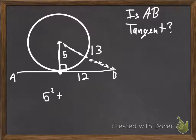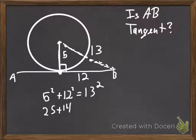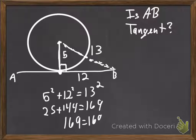So, we take leg squared plus leg squared and see if it equals hypotenuse squared. So, 25 plus 144. And we find out that, indeed, it is a right triangle.